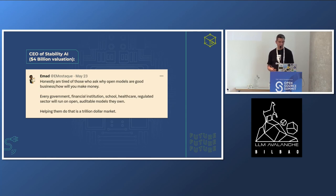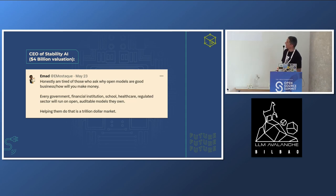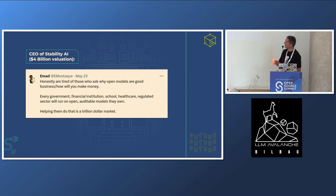I found this interesting tweet by Ahmed, who's the CEO of Stability AI — a company valued at $4 billion. He says: for people asking how open models are going to make money for business — imagine this: every government, every institution, every company is going to have a model, an open model that's auditable in the future. This is like a trillion-dollar market. How can we enable that? It has huge potential.